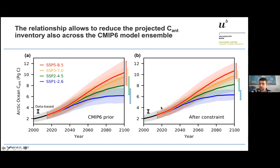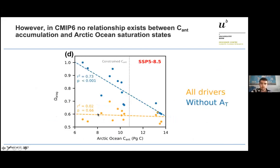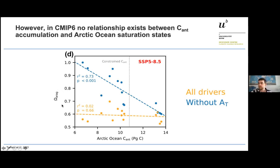We then repeated the same for ocean acidification in CMIP6 and found a surprising result. When including all drivers, there is no correlation between density and future saturation state — it becomes a horizontal line. But if we exclude changes in alkalinity, our old relationship returns. This means that in the new generation models, those that take up more or less anthropogenic carbon also have strong reductions in alkalinity that create lower saturation states. Models with high carbon uptake seem to have low alkalinity reduction, and models with low uptake have high alkalinity reduction, leading to almost the same degree of ocean acidification.